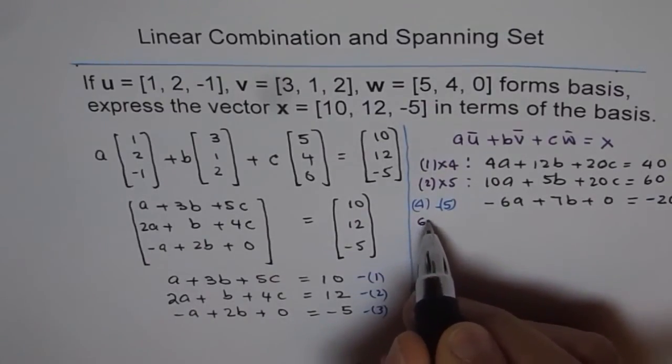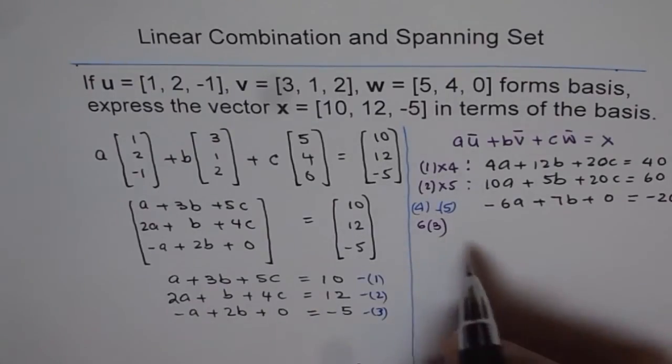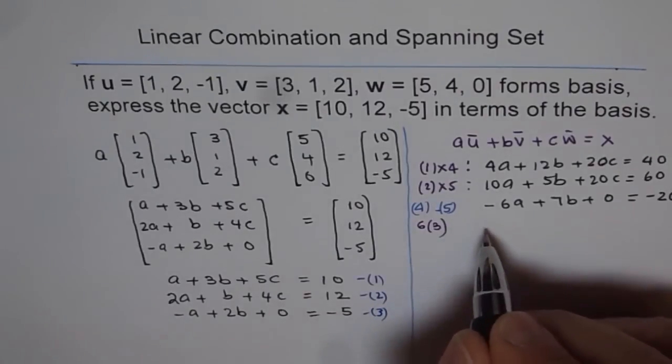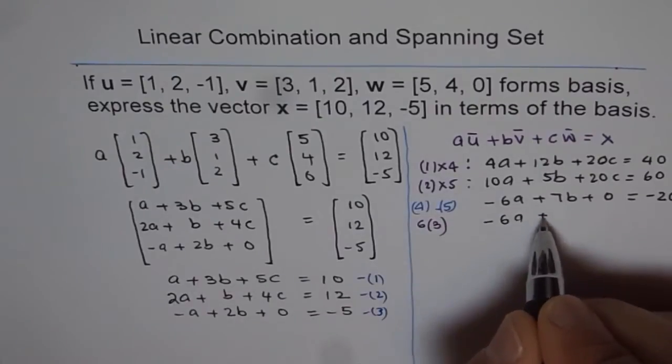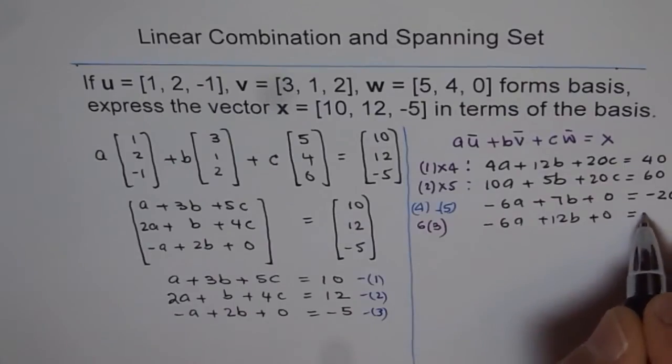So we have 6 times equation 3, and then do the needful to solve for B. So 6 times equation 3 is minus 6A and plus 12B plus 0 equals to minus 30.